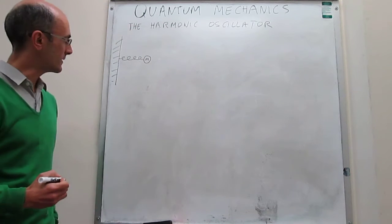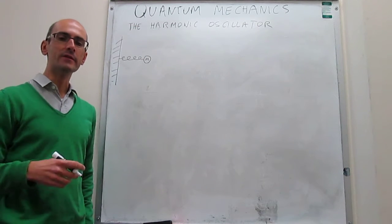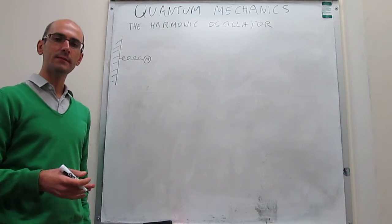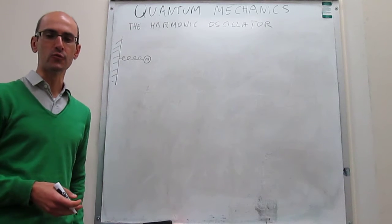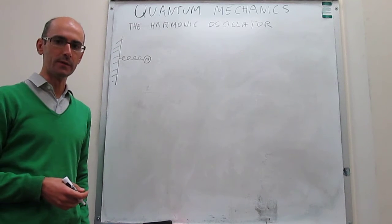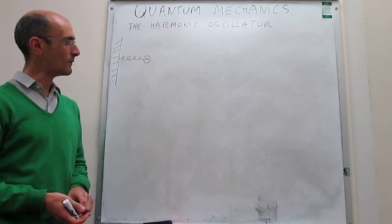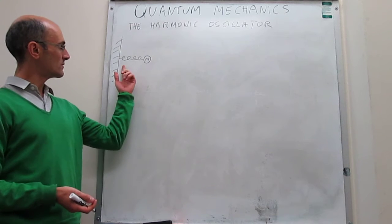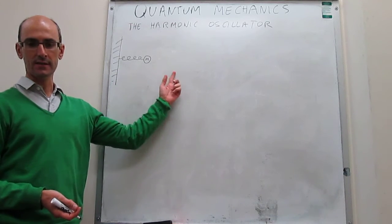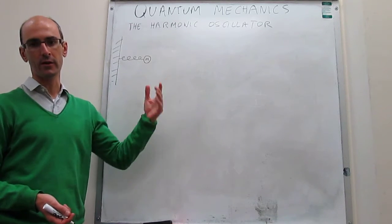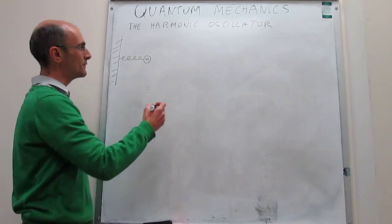The mass of the particle is called m. The idea here is to set up and solve the Schrödinger equation to understand how this motion takes place. It's a one-dimensional problem because the motion only takes place in one direction — in this case, left to right — which we're going to call the x-axis.